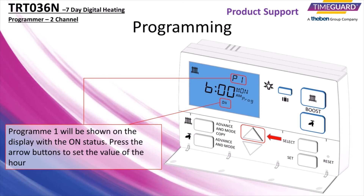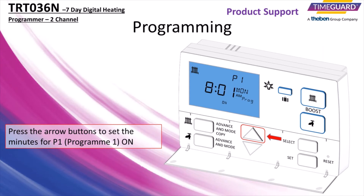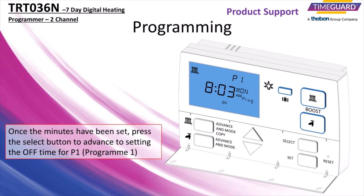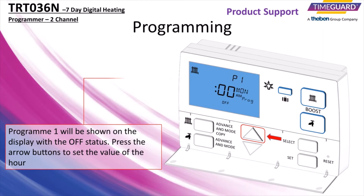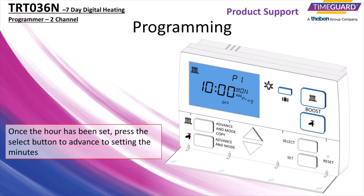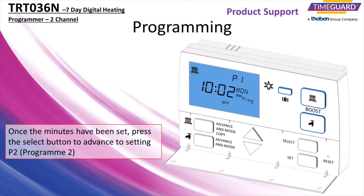Press the arrow buttons to set the value of the hour. Once the hour has been set, press the select button to advance to setting the minutes. Press the arrow buttons to set the minutes. Once the minutes have been set, press the select button to advance to setting the off time for program 1. Program 1 will be shown on the display with the OFF status. Press the arrow buttons to set the value of the hour. Once the hour has been set, press the select button to advance to setting the minutes. Once the minutes have been set, press the select button to advance to setting program 2.